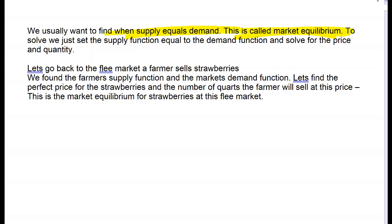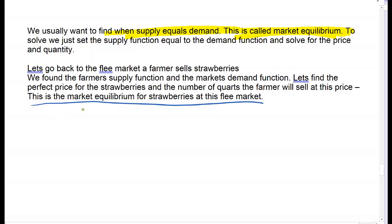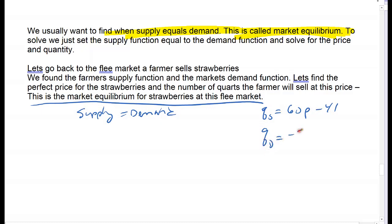Going back to my strawberry example, I want to find the perfect market for these strawberries—what price do I need to set so the farmer brings exactly the amount that will be demanded at that price? To find market equilibrium, I take my supply equation and set it equal to my demand equation. Quantity supplied was 60 times price minus 41, and quantity demanded was negative 50 times price plus 205. Set them equal and solve for price.